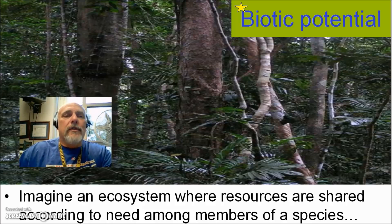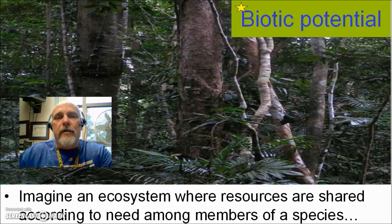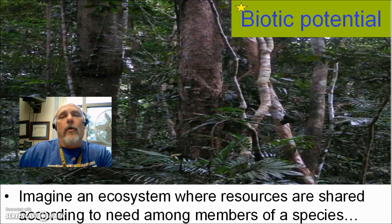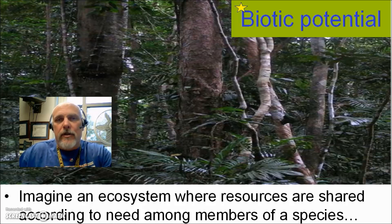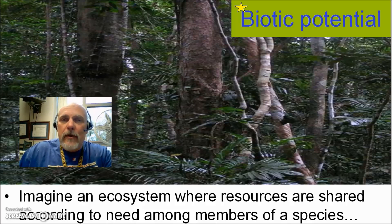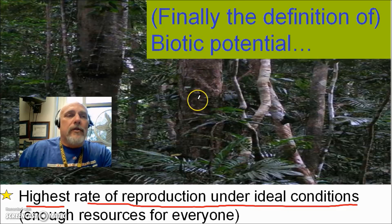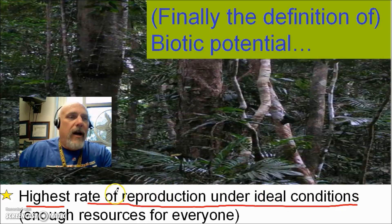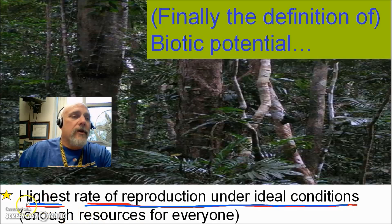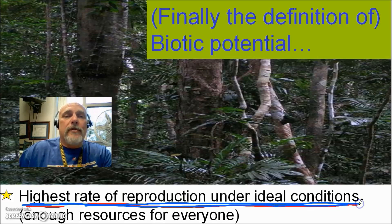Imagine an ecosystem where resources are shared according to need among members of a species. If there are 100 rabbits, those 100 rabbits only use the resources they need — none wasted, none missing. It's a perfect, ideal situation. So the science-y definition of biotic potential is the highest rate of reproduction under ideal conditions, where there are enough resources for all members of that species.